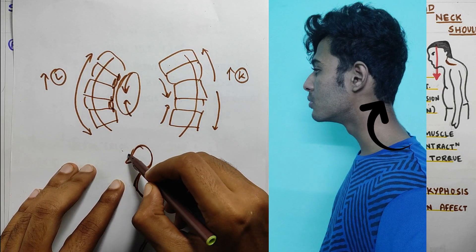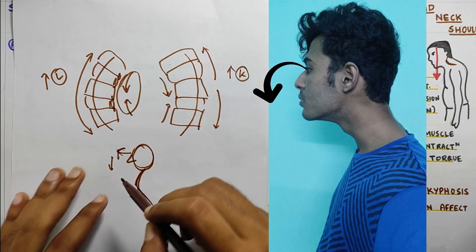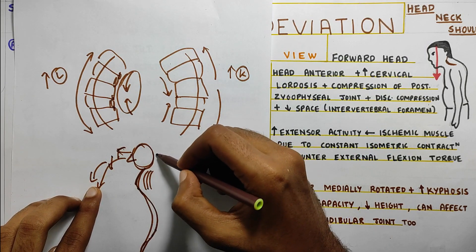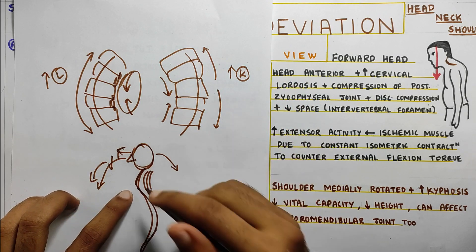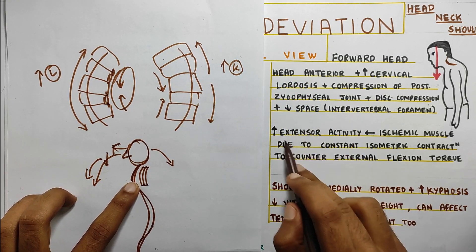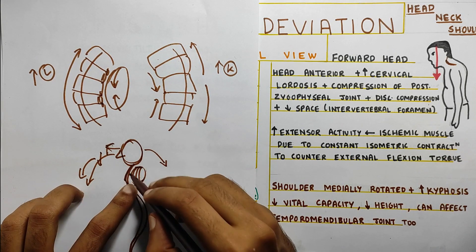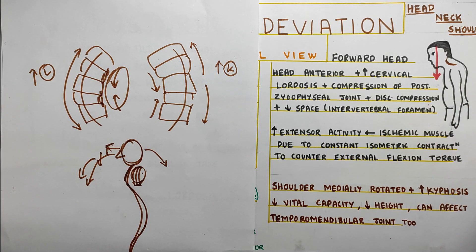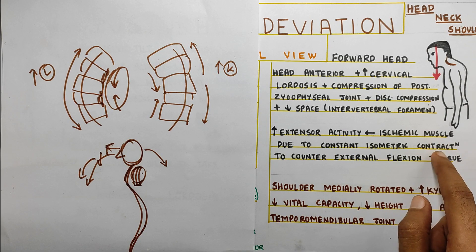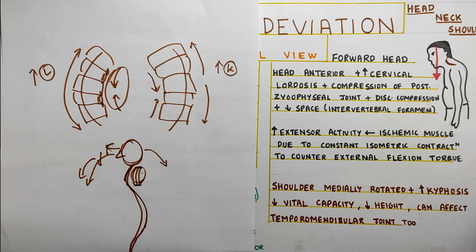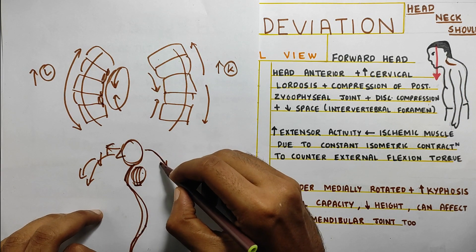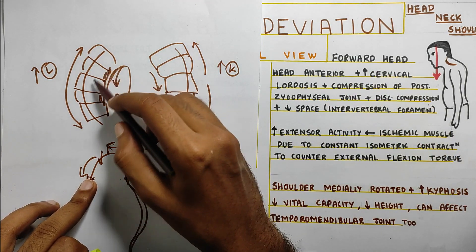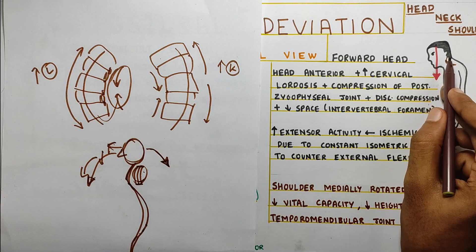Apart from this, there is the head on top — as the head goes forward, gravity will be pulling it anteriorly. All your extensor muscles have to work to get it back into the right position. Because of this, there is increased extensor activity which can cause ischemic muscle — damage to the muscle because there is no proper oxygen supply and they are overworking. Due to this constant isometric contraction there can be ischemic muscles, which creates problems in your cervical spine. The muscles are acting just to create that extension torque and fight gravity, and the space is also reduced, causing a lot of problems in the cervical spine.